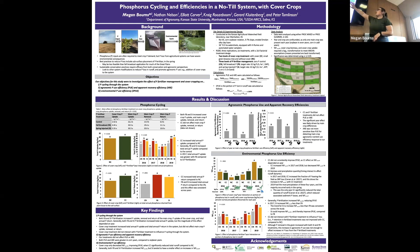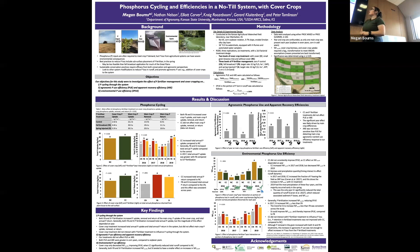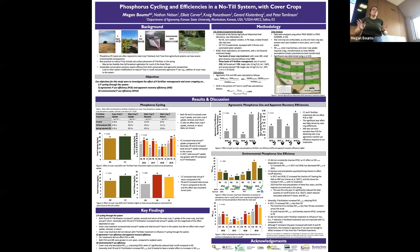A couple of key things about our methods: these are larger plots, each about half a hectare in size, and each one is its own individual watershed, which allows us to collect runoff water data from each individual plot. We're in a proper corn-soybean rotation — corn one year, soy the next — and it's been no-till since 2014. We're working in a two-by-three factorial: two levels of cover crop (with and without), and three phosphorus fertilizer management treatments: zero P control, fall broadcast, and spring injected.